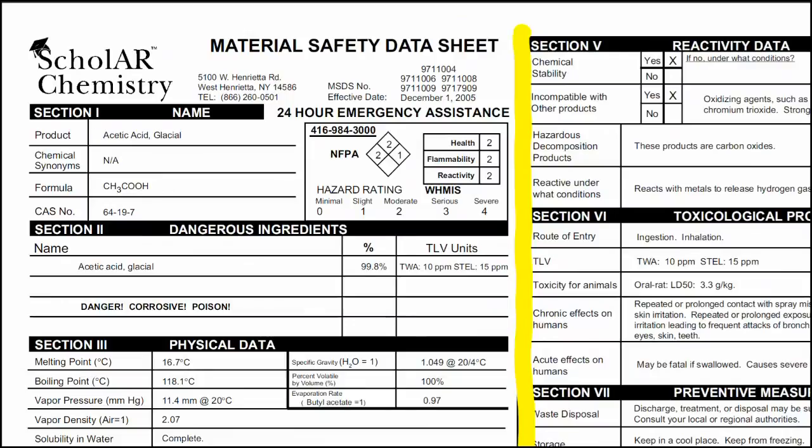Beside the product information, you can see the hazard ratings. There are typically two ratings on the MSDS: the NFPA rating for firefighters, and the WHMIS rating, which is our interest here. In the WHMIS rating there are three categories — health, flammability, and reactivity — with a number associated with the degree of severity of risk. The legend for these ratings is located right under the two charts.